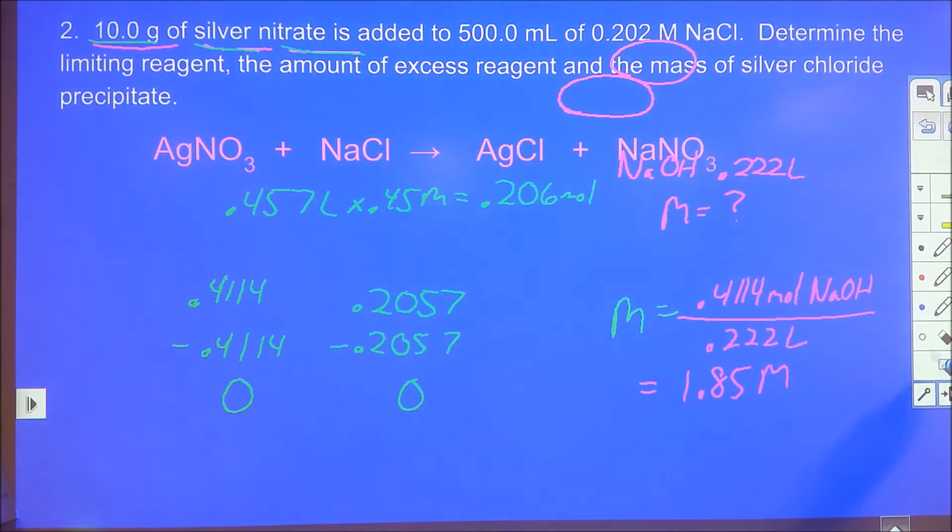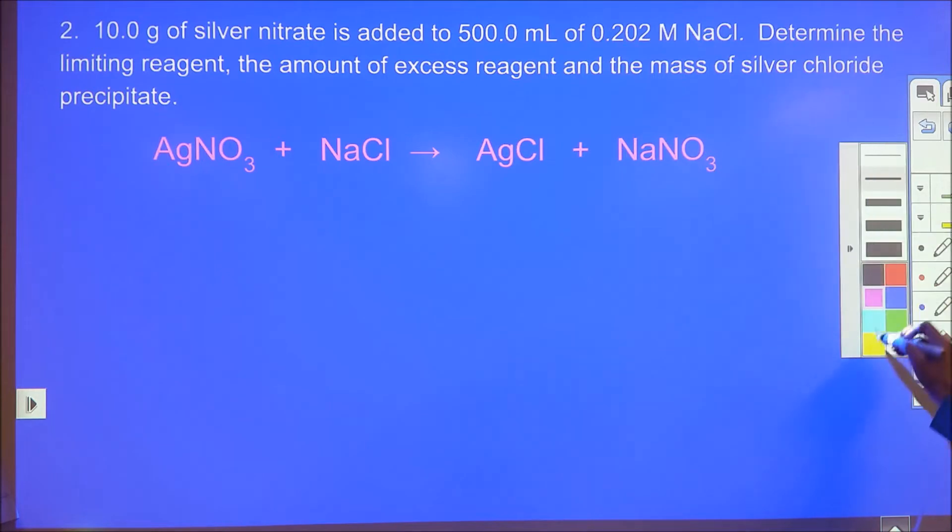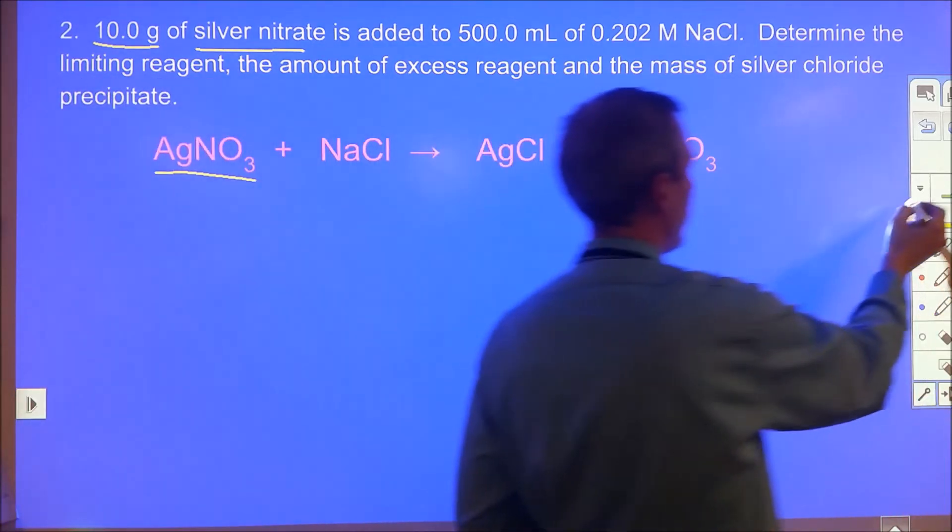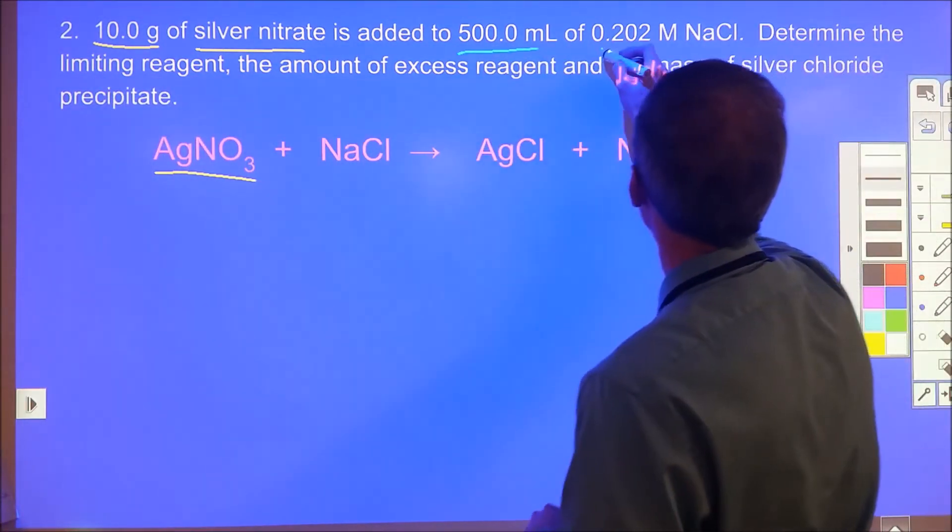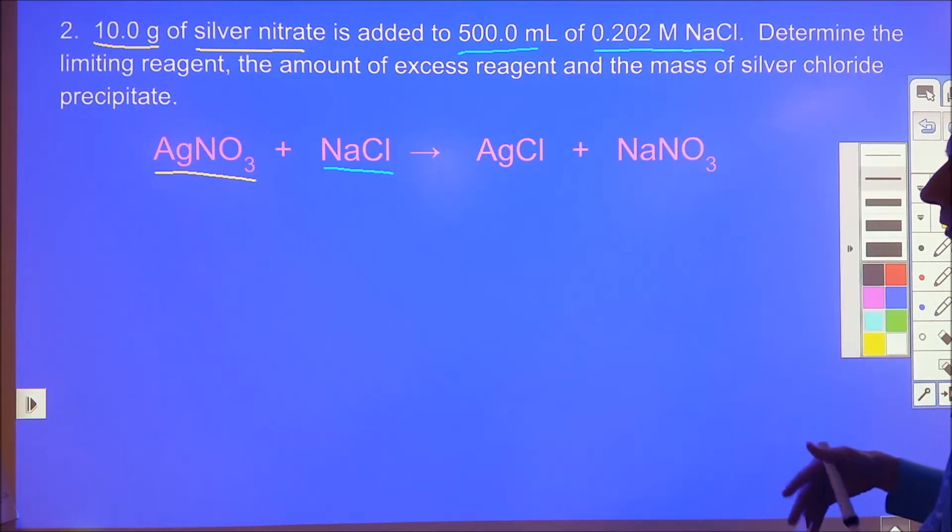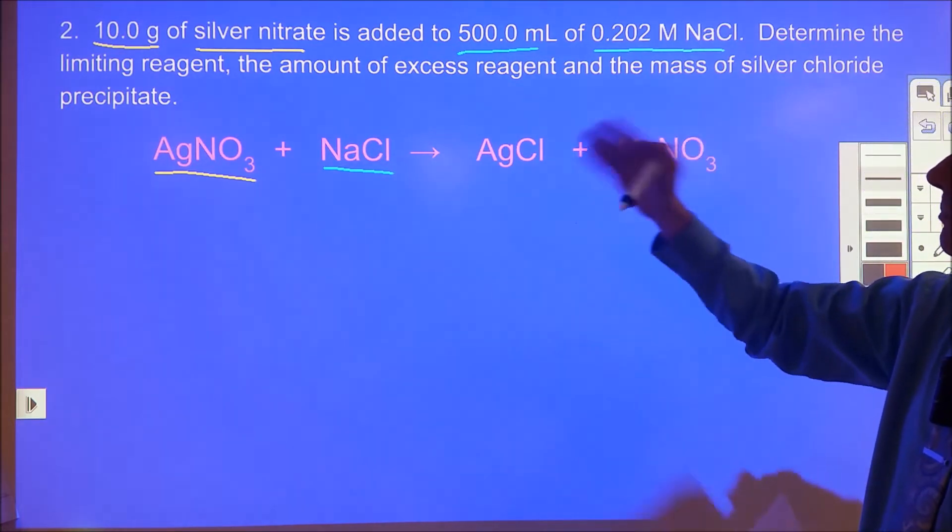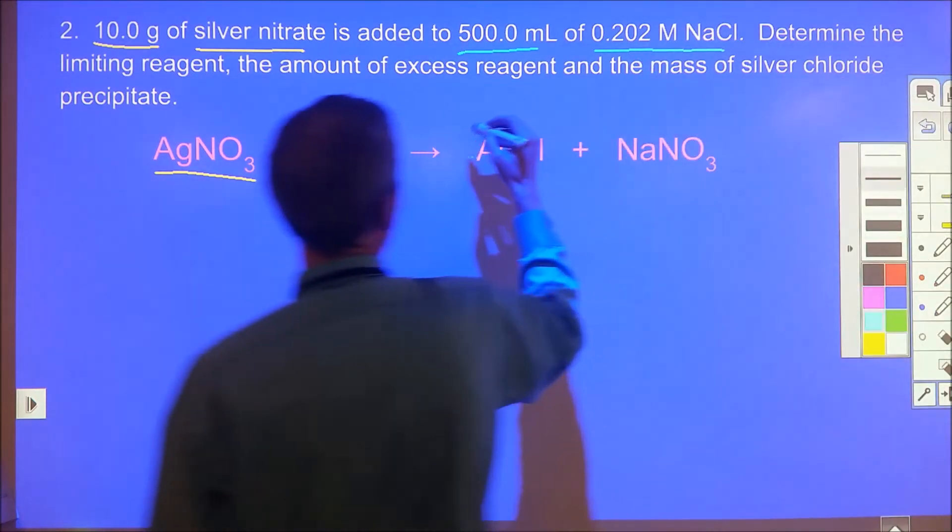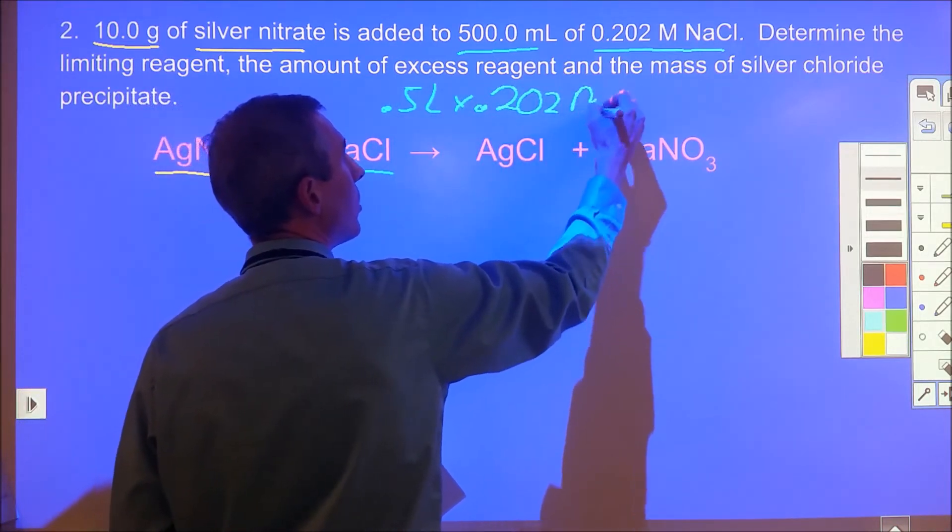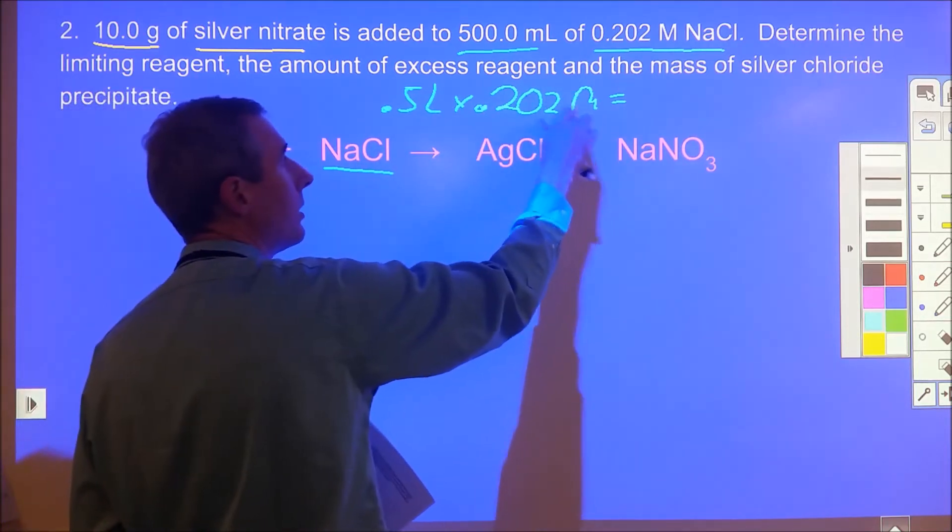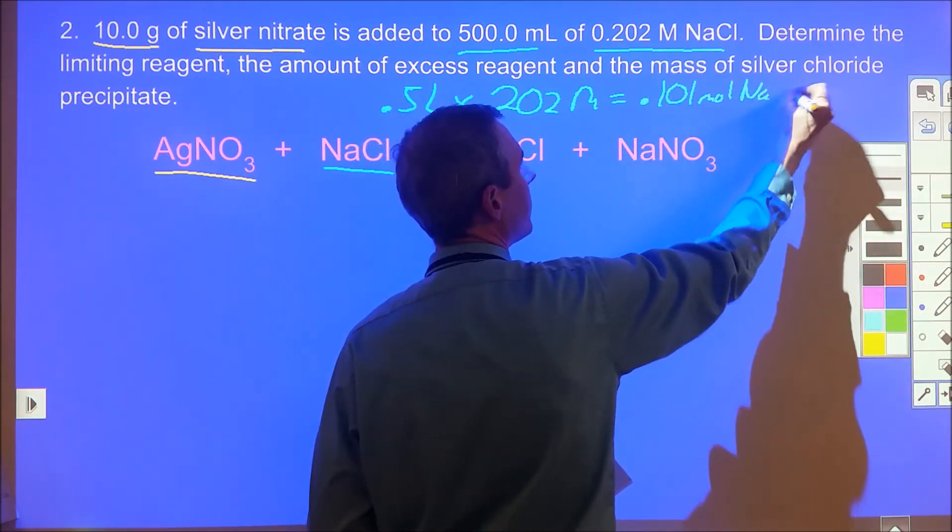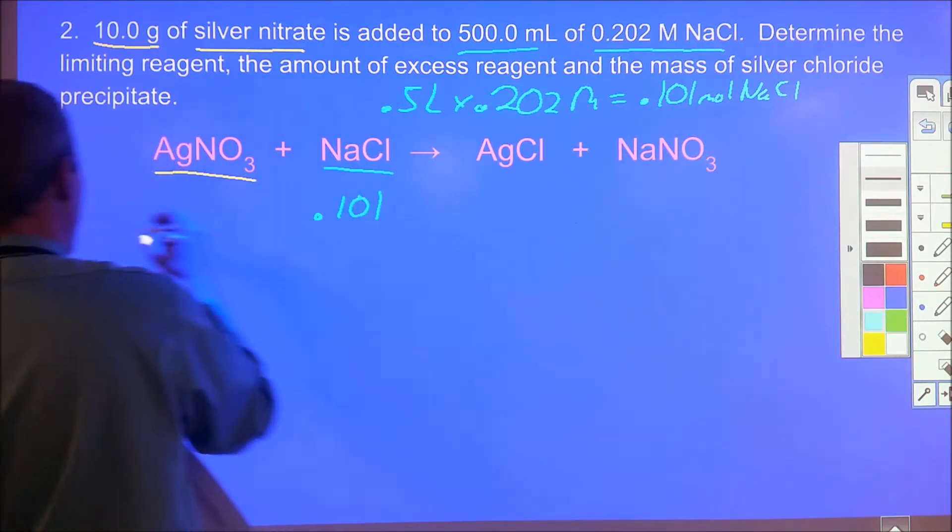The second question combines with perhaps more typical BCA problem analysis. We have 10 grams of silver nitrate added to 500 milliliters of 0.202 molar sodium chloride. We want to take both of these and change them into moles. Starting with sodium chloride: 0.5 liters times 0.202 molar gives us 0.101 moles of sodium chloride.